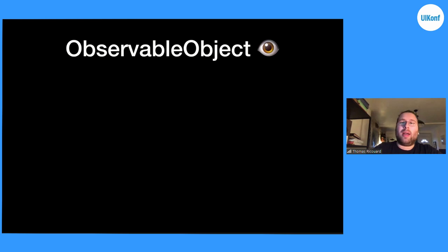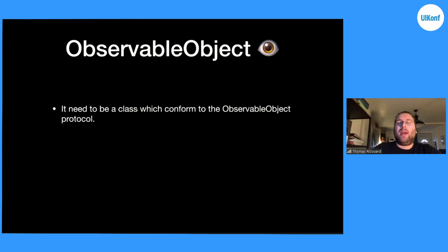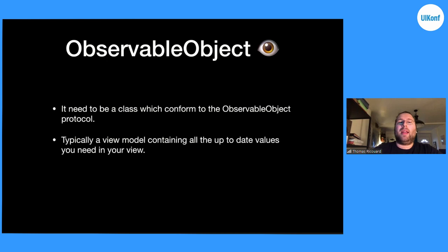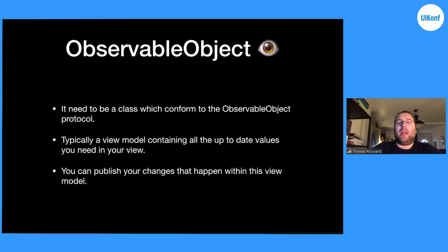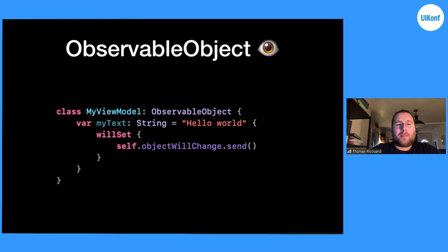Now we'll take a look at the ObservableObject protocol. It's a protocol you can implement on a class — you can't use it on a struct. Typically, you want to use this protocol on a view model. The view model will contain all the computed properties you need for your views, and it will be observable so your view can get the latest changes. In our view model example, we have MyViewModel conforming to ObservableObject with a property myText storing "hello world". We implement willSet on it, and whenever willSet is called, we call objectWillChange.send, which we have access to from the ObservableObject protocol. Whenever we call objectWillChange, it notifies all subscribers — in our case SwiftUI views — that there is a change and the view can be refreshed.